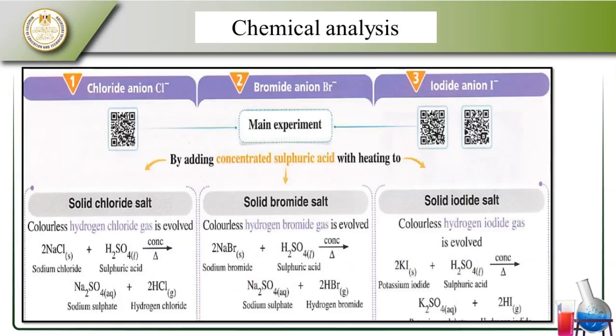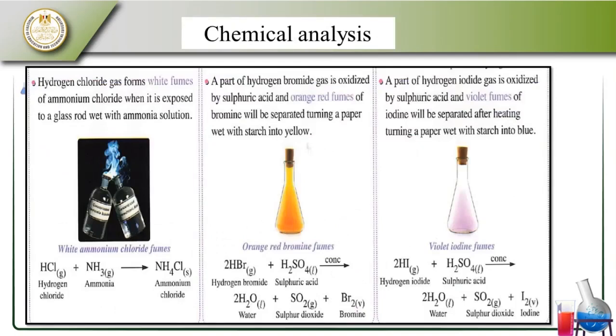Let's look at chloride ion, bromide ion, and iodide ion. Solid sodium chloride with sulfuric acid gives sodium sulfate and hydrogen chloride gas. Sodium bromide with sulfuric acid gives sodium sulfate and hydrogen bromide gas. Potassium iodide with sulfuric acid gives potassium sulfate and hydrogen iodide gas.